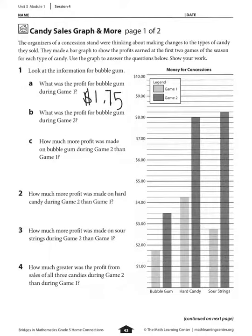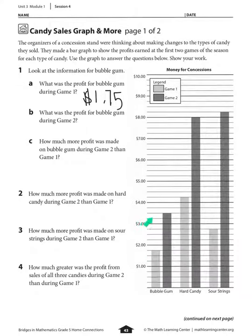Part B asks: what was the profit for bubble gum during game two? The scale is the same throughout the whole bar graph — each line represents a quarter of a dollar, which is twenty-five cents. For game two, I see three dollars and two quarters, so that's three dollars and fifty cents.